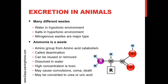Amino acids are broken down and their amino groups are removed — this process is called deamination. The amino group can either be reused or removed from the body. If ammonia reaches a high concentration, it becomes toxic. If ammonia increases too much inside your body, it is very poisonous.